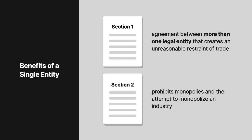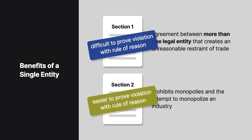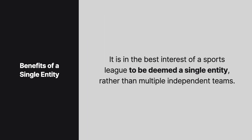Generally, it is more difficult to prove an antitrust violation under Section 1 of the Sherman Act with a rule of reason analysis than it is to prove a violation under Section 2 under the rule of reason. Because of this, it is generally in the best interest of a sports league to be deemed a single entity, rather than multiple independent teams, for the purposes of antitrust disputes.